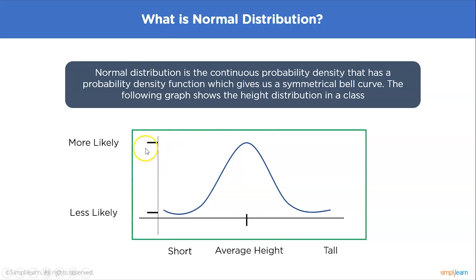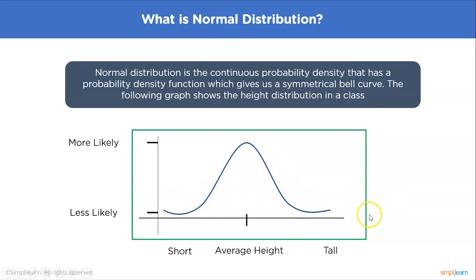As height decreases or increases from the average, the number of people with that height also decreases. This kind of distribution is called a normal distribution, where the mean is always the highest point. The resulting data gives us a bell curve with no abrupt bias or spike anywhere except at the average height. It's called normal distribution because the data is normally distributed with the average being highest.